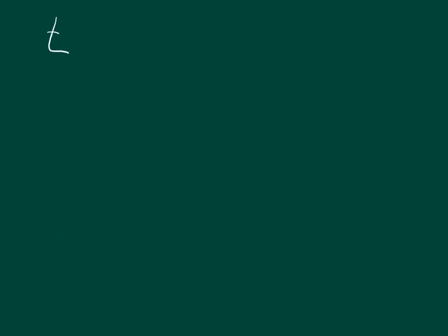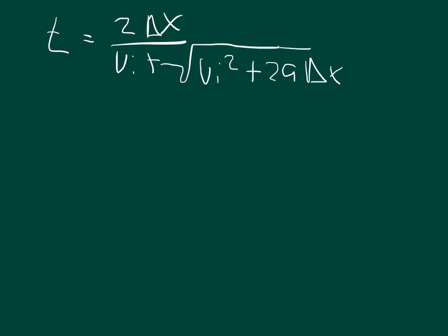So when I rewrite this, I should get that the time equals 2 delta x over the initial velocity plus, and instead of putting the final velocity, I'm going to put what the final velocity equals. The square root of the initial velocity squared plus 2a delta x. So that's all under that bar. And so here we have a symbolic equation.